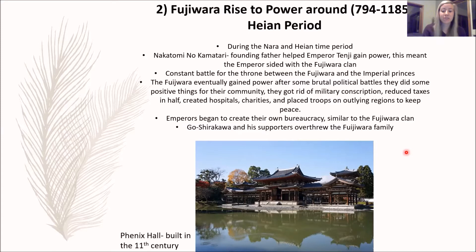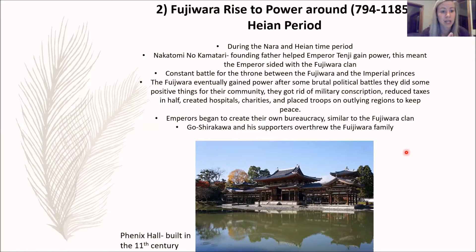Some things to note: the Fujiwara did do positive things for the community. They reduced taxes by half, created hospitals and charities, and protected their community. Meanwhile, behind the scenes, the emperors began creating their own bureaucracy similar to the Fujiwara clan. The emperors realized the Fujiwara clan was more successful and so they teamed together, building their own bureaucracy, eventually leading to the overthrow of the Fujiwara family.